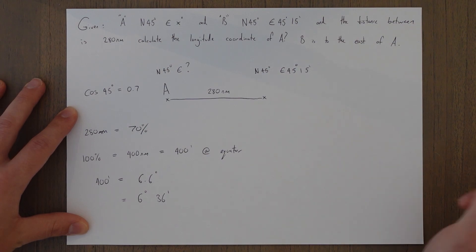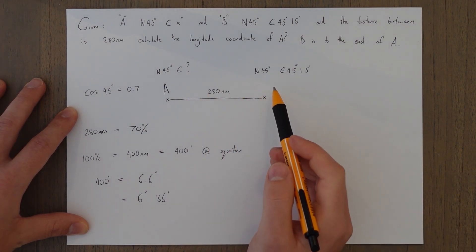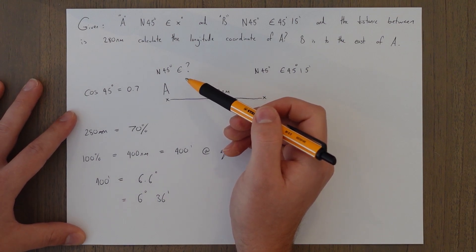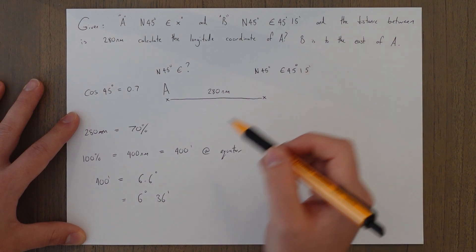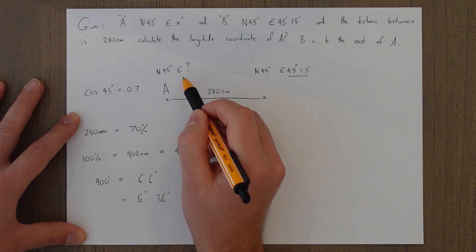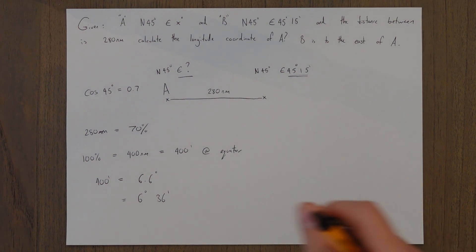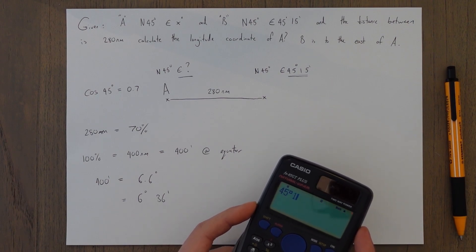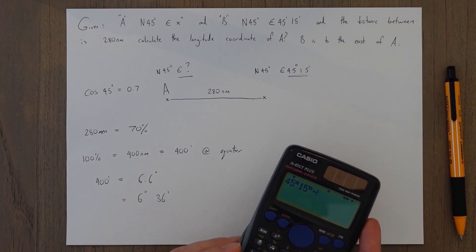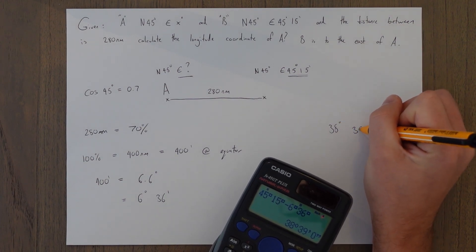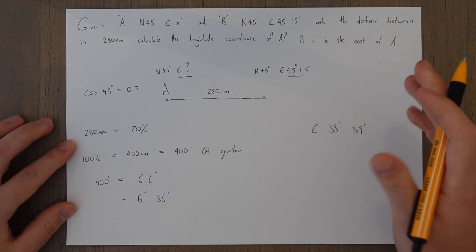And then all we have to do is figure out which direction we are in. So we're 45, 15. East is going to be further to the west than us. So we have to take the 6.6 degrees or 6.36 minutes from this number to find out this number. And we can do that using our cheat method so that we don't get confused. 45 degrees, 15 minutes. Take away 6 degrees and 36 minutes. And you end up with 38 degrees and 39 minutes. And it will be east. There you go. There's a little example for you.